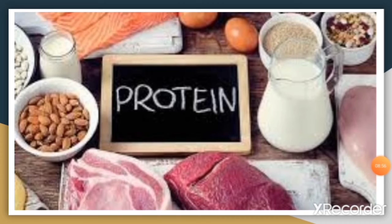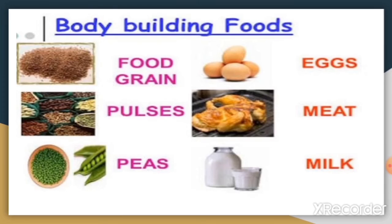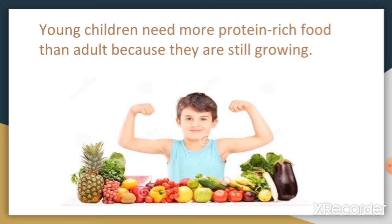The next food group is protein. Food items such as milk, egg, cheese, fish, meat, beans, and pulses are rich in protein. Food items rich in protein are called body-building foods, as they help build muscles and are needed for the growth and repair of our body. Protein-rich foods include food grains, pulses, peas, egg, meat, and milk. Young children need more protein-rich food than adults because they are still growing.